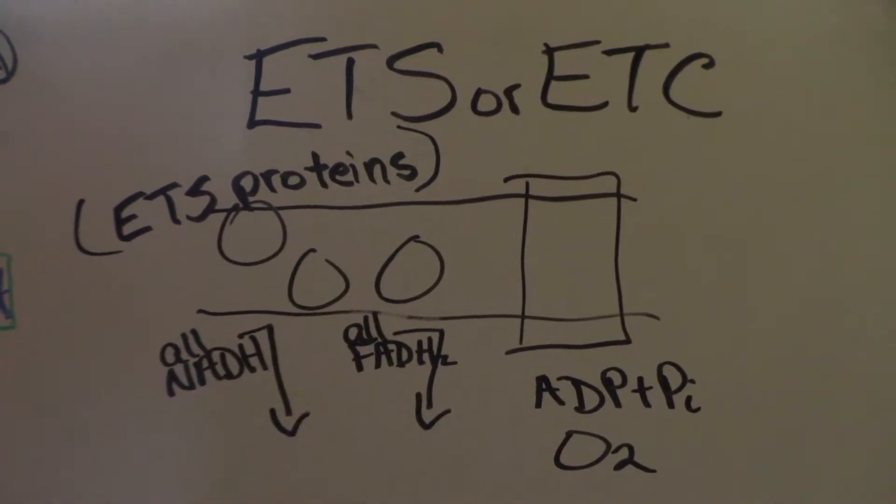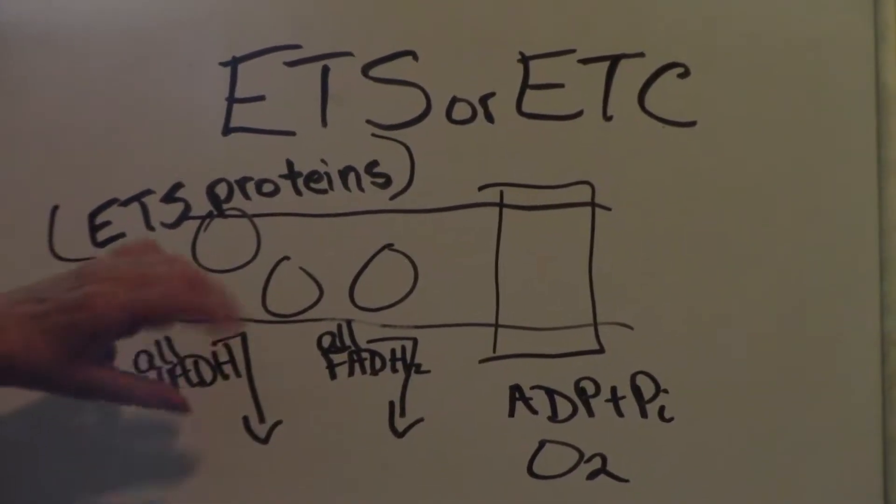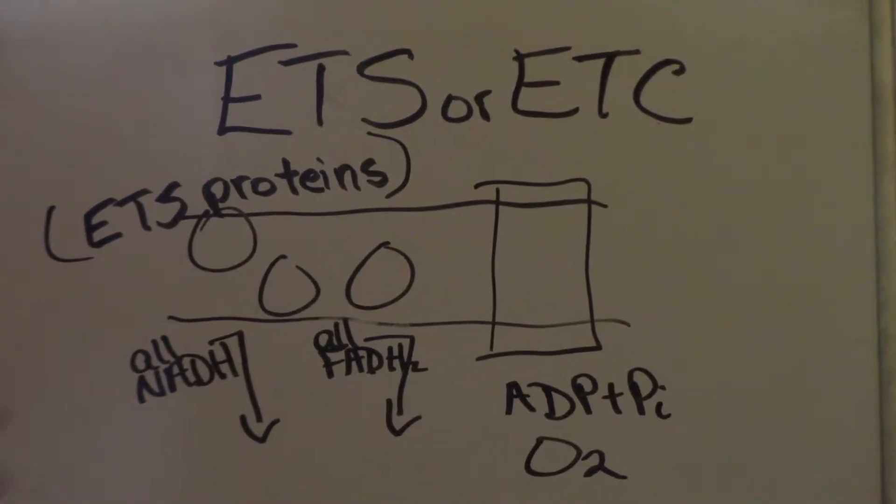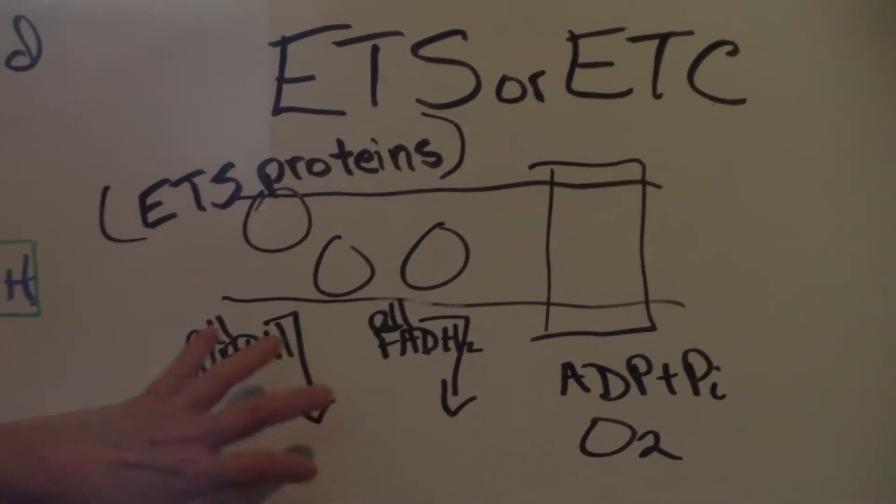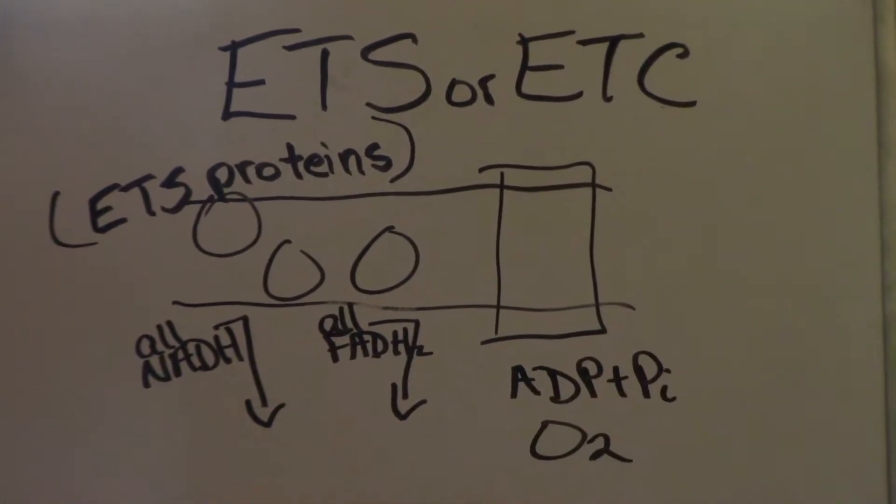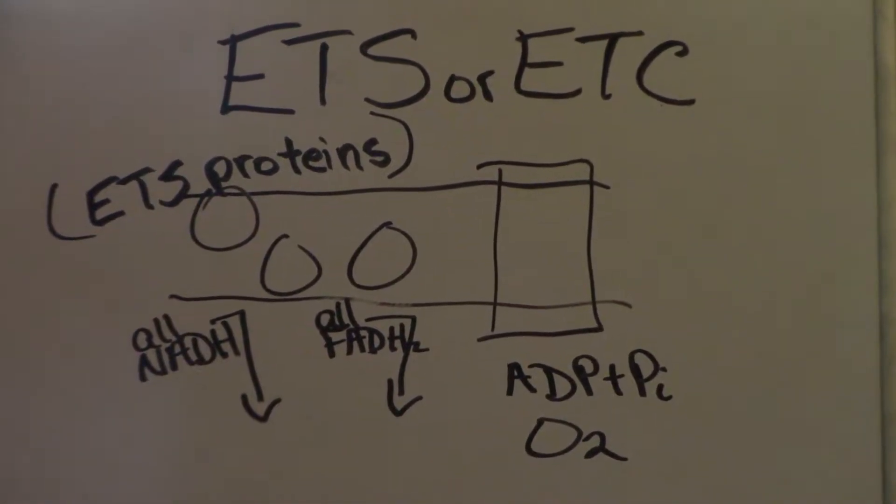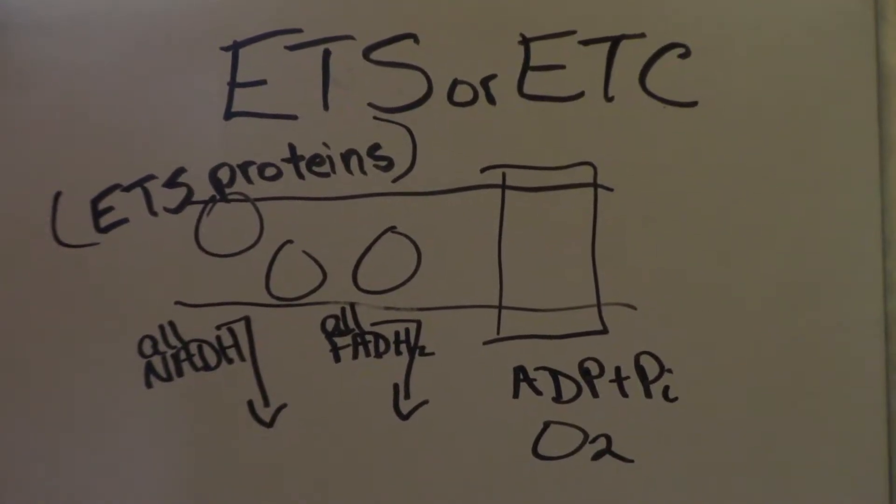So what we have here then is what goes in. We have ETS proteins, not really part of the reaction but I always include them. All the NADH, all the FADH2, ADP plus P sub I, and oxygen. So what happens? And this gets a little complicated.